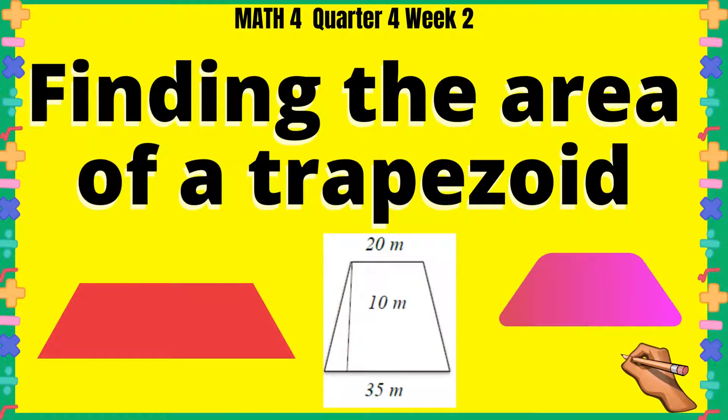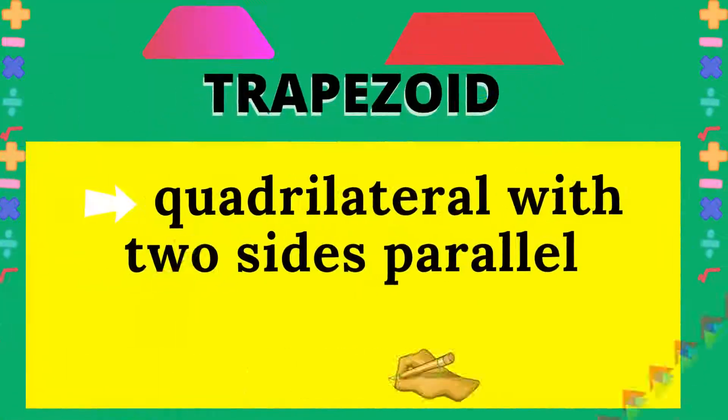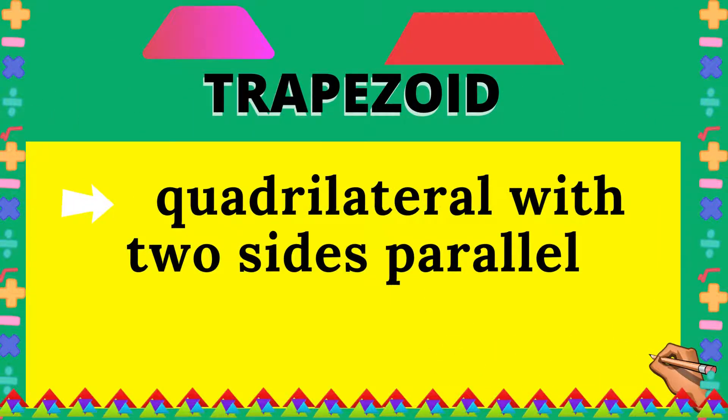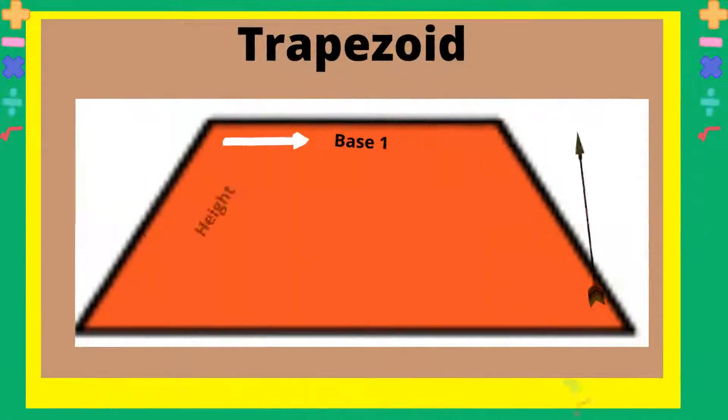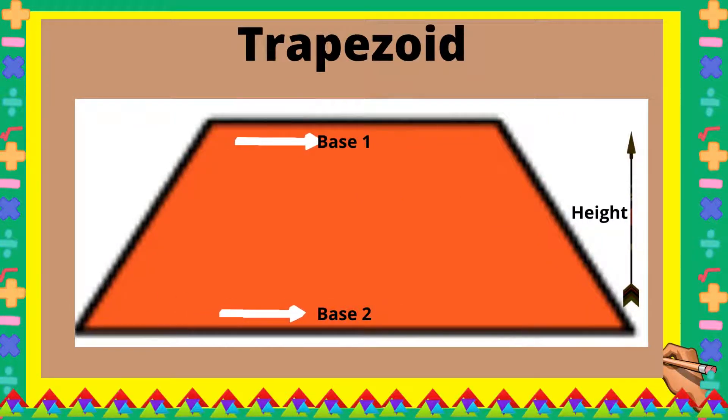Math 4, Quarter 4, Week 2: Finding the Area of a Trapezoid. What is a trapezoid? A trapezoid is a quadrilateral with two sides parallel. Looking at this trapezoid, you can see base 1, which is a parallel line.